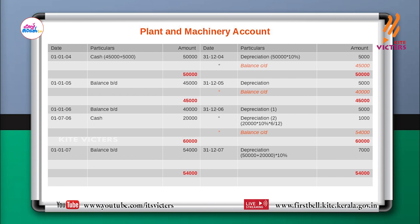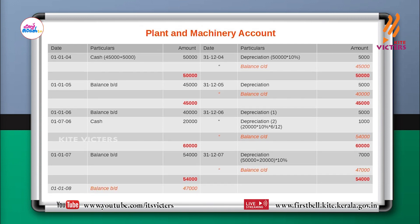Balance brought down on 1st January 2007 is ₹54,000. In 2007, depreciation is calculated on both assets: (₹50,000 + ₹20,000) × 10% = ₹70,000 × 10% = ₹7,000. Total debit = ₹54,000; depreciation = ₹7,000; balance carried down = ₹54,000 − ₹7,000 = ₹47,000. Balance brought down on 1st January 2008 is ₹47,000.